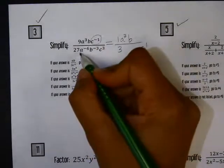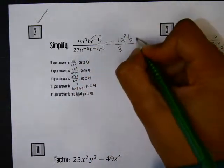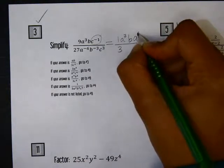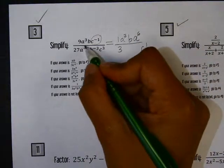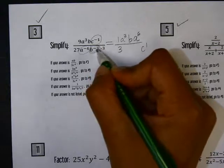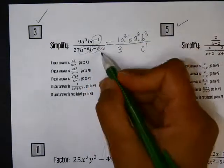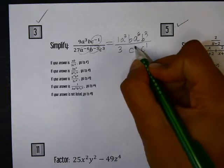Then in the denominator, A to the negative 6, that's going to move to the top and become a positive 6. B to the negative 3rd also moves to the top and becomes a positive 3. C cubed is going to stay down here on the bottom.